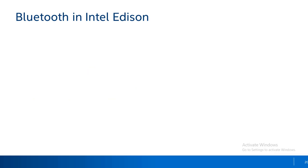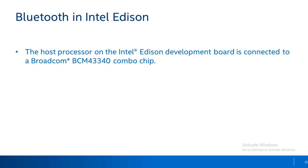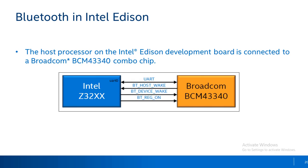Now let's look at the second key area of this webinar: Bluetooth in Intel Edition. Intel Edition board holds a built-in Bluetooth Low Energy module. The Intel Atom processor, which is the host processor in Intel Edition board, is connected to the Broadcom BCM43340 single-chip quad radio device via UART. This host processor also uses additional GPIO to handle power and out-of-band signaling for UART to support low power mode.